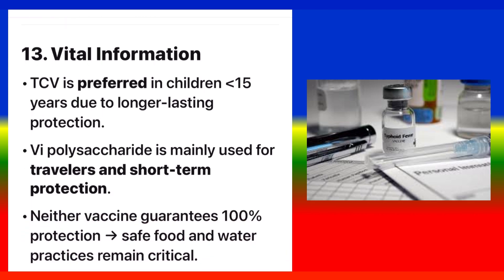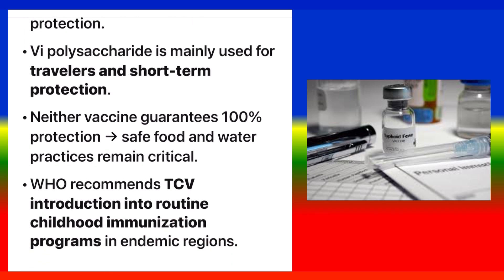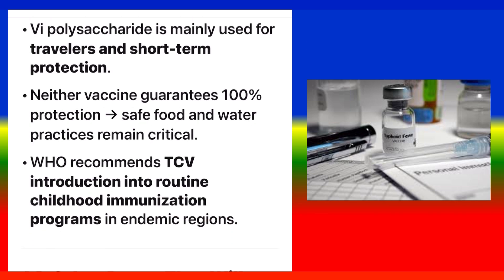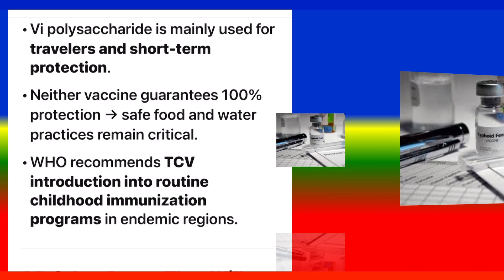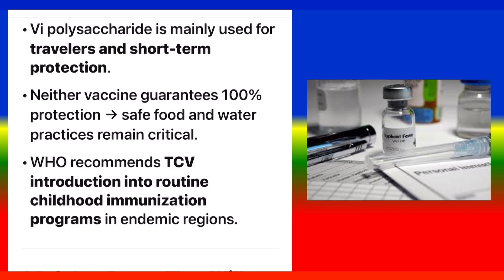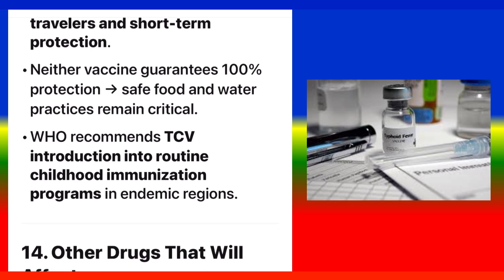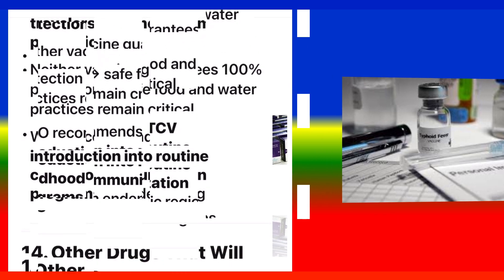Vital Information: TCV is preferred in children under 15 years due to longer-lasting protection. Vipolysaccharide is mainly used for travelers and short-term protection. Neither vaccine guarantees 100% protection, so safe food and water practices remain critical. WHO recommends TCV introduction into routine childhood immunization programs in endemic regions.